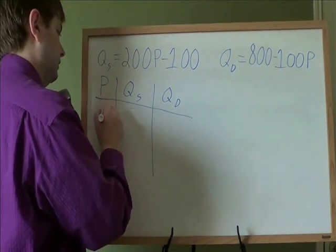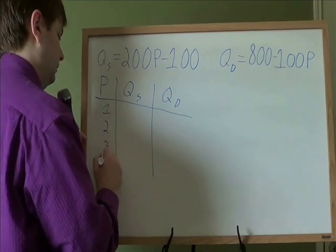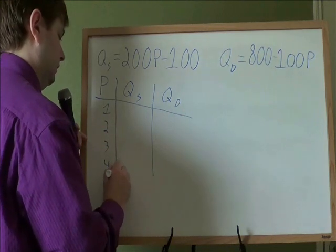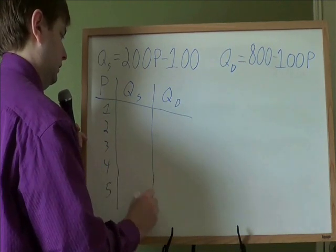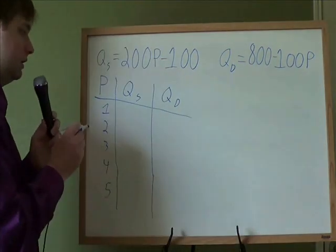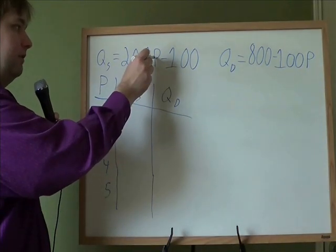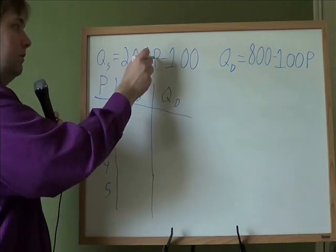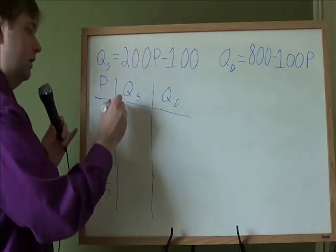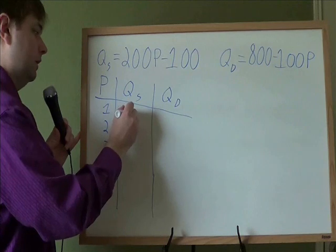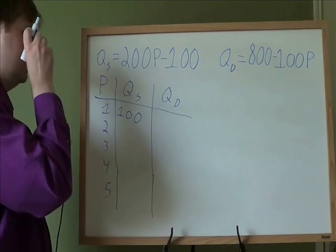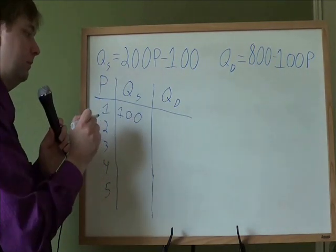The price is going from $1 to $5. To do this, we just take each price and plug it into that P right there. So 200 times 1 is 200, minus 100, gives you 100. If the price of apples is $1, that means farmers want to go and sell 100 of them.